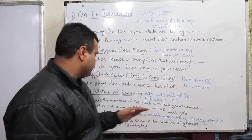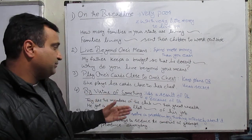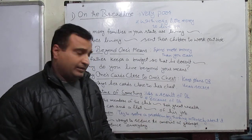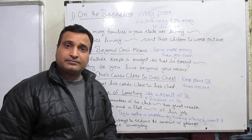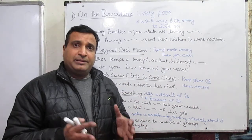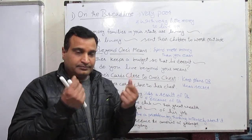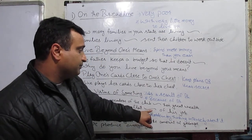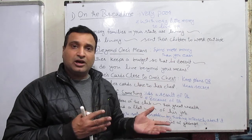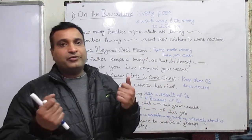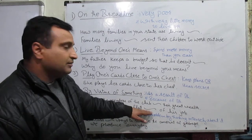Next vocabulary: 'by virtue of something' — it means as a result of something, or because of something. For example: 'They are members of the club by virtue of their great wealth' — many people become members not because of their knowledge or skill, but because of their wealth. Another example: 'He got a car and flat by virtue of his job' — many students after graduation, when they get a good job according to their skill, they go for buying a car and flat. That is the dream of every student.